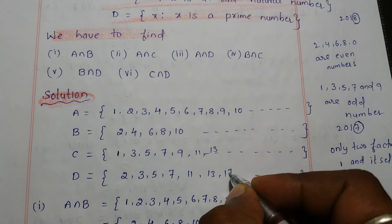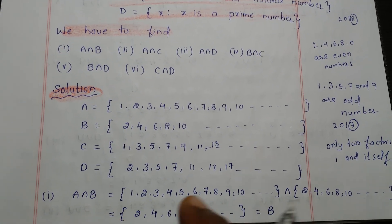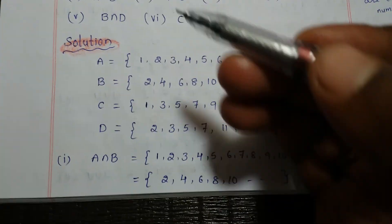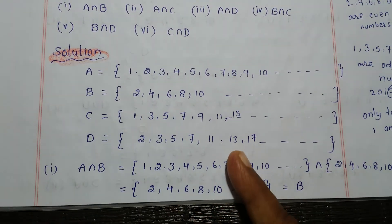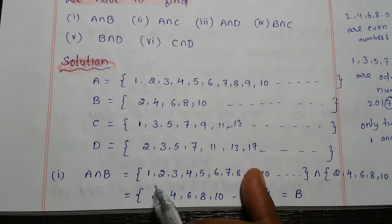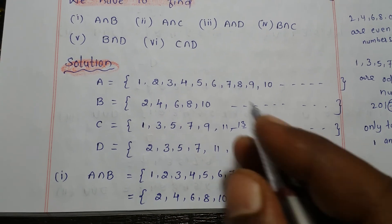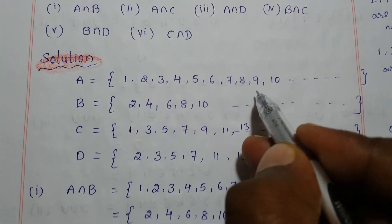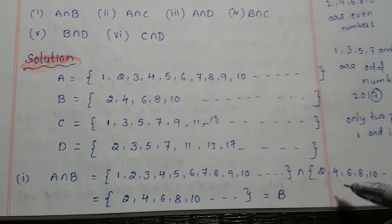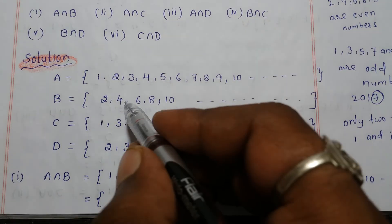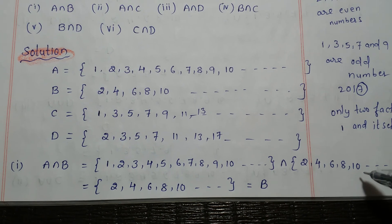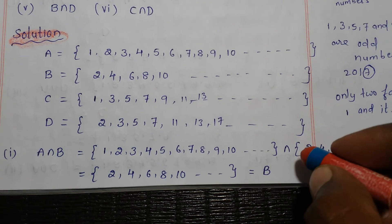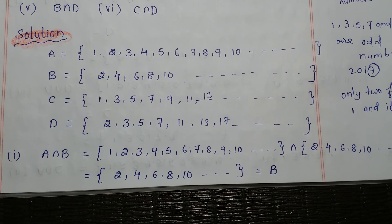First, A intersection B. Write all the elements of A: 1, 2, 3, 4, 5, 6, 7, 8, 9, 10, and so on. Intersection B: 2, 4, 6, 8, 10, and so on. Mark all the common elements — intersection means we write only the common elements from both sets.